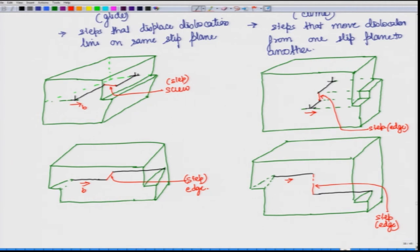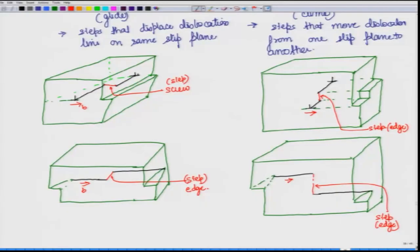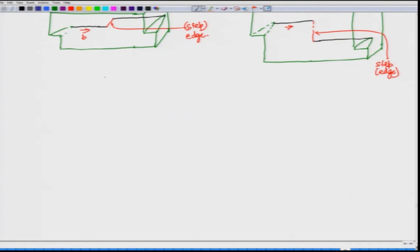Now in that particular case let us see whether the steps that have formed are going to help or not. Usually you can imagine that for glide we get kinks and the kink helps in glide, so in that case glide would be enhanced when there is kink formation. But jogs are formed for climb - what we are looking at is the glide motion of the dislocation, so the jogs would not always help. In some cases it may help, but not always help in the glide of the dislocation.